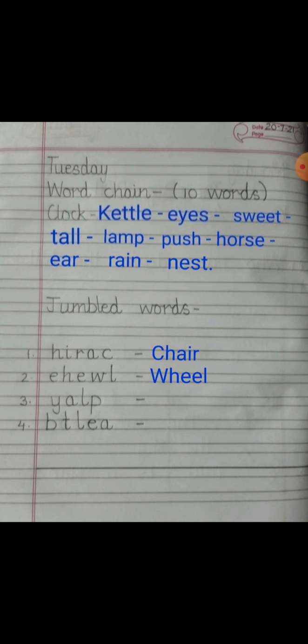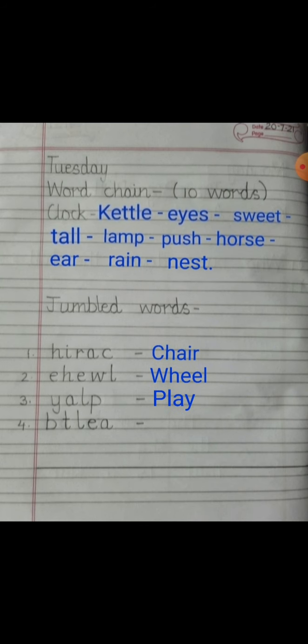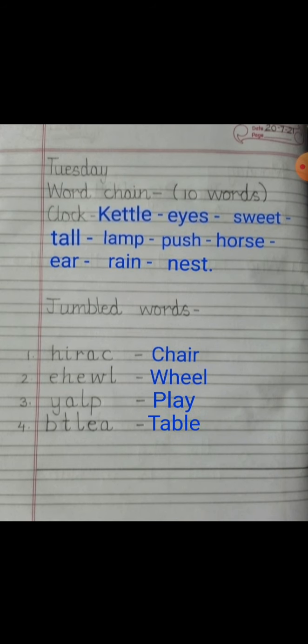The third one is Y-A-L-P and the correct word is P-L-A-Y, 'play'. Let's try the next one: B-T-L-E-A, and the correct word is T-A-B-L-E, 'table'. At the end, draw a finishing line. Thank you, children.